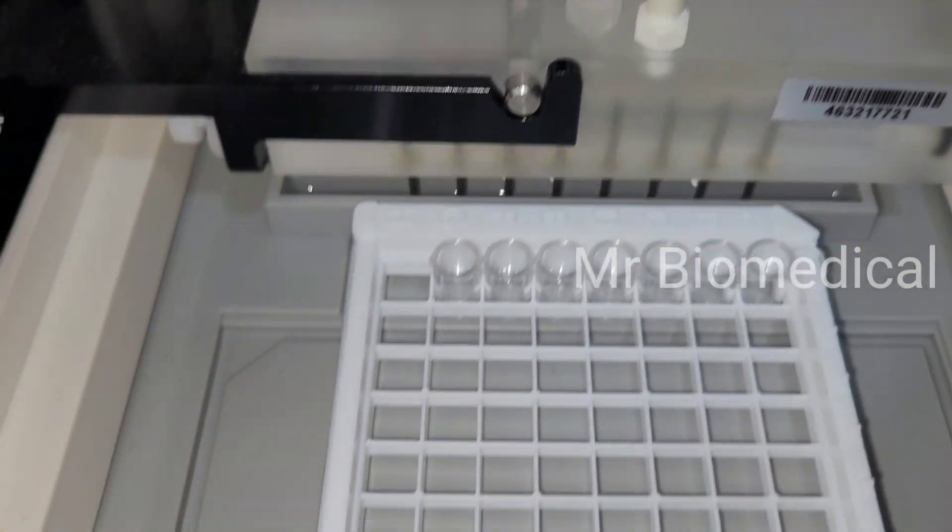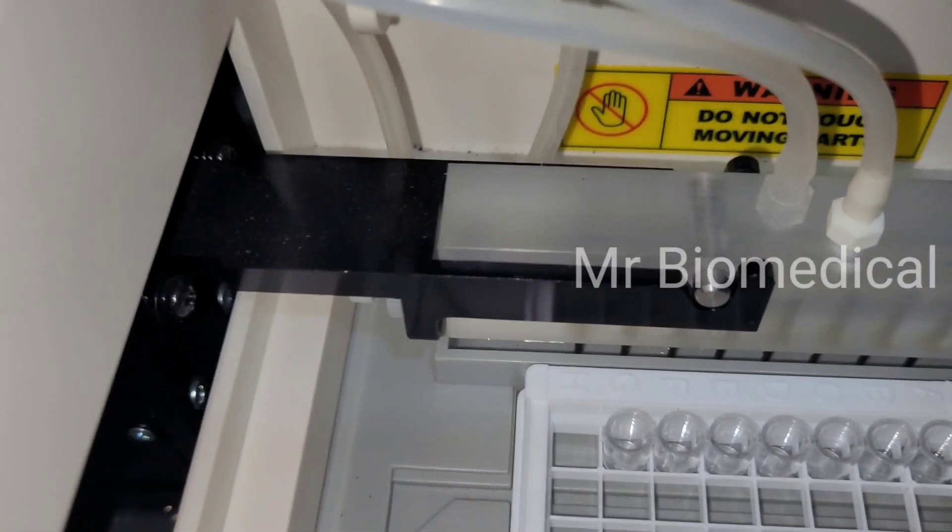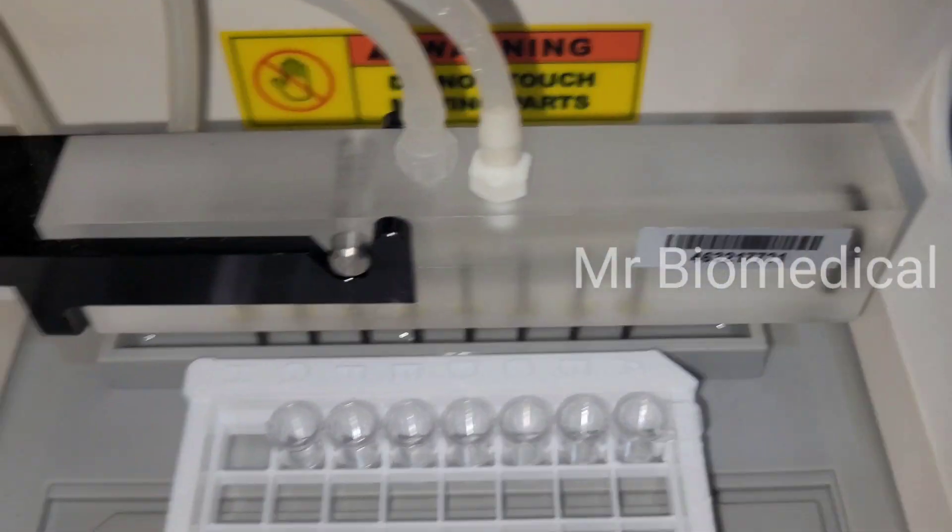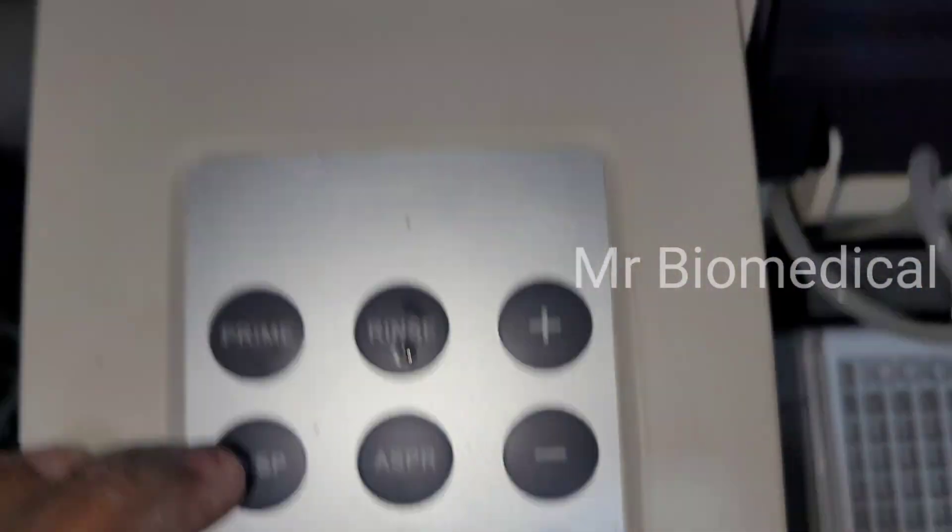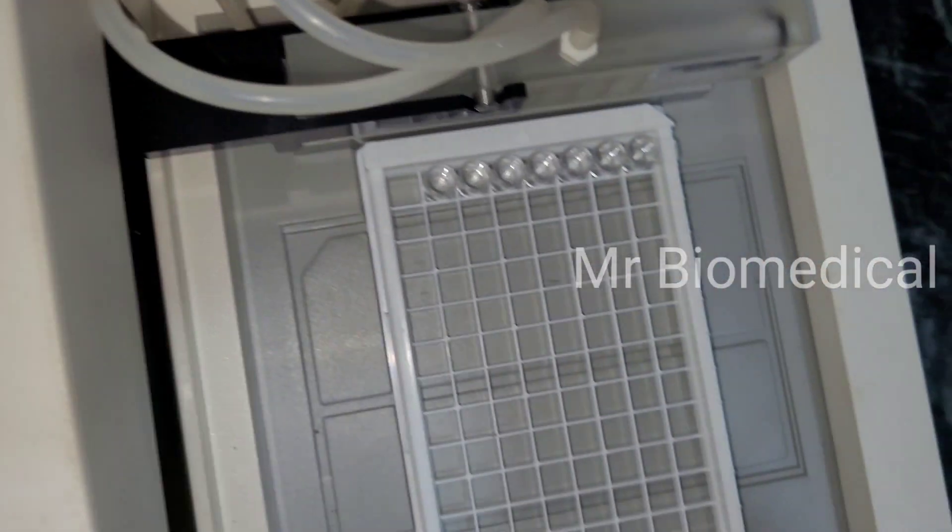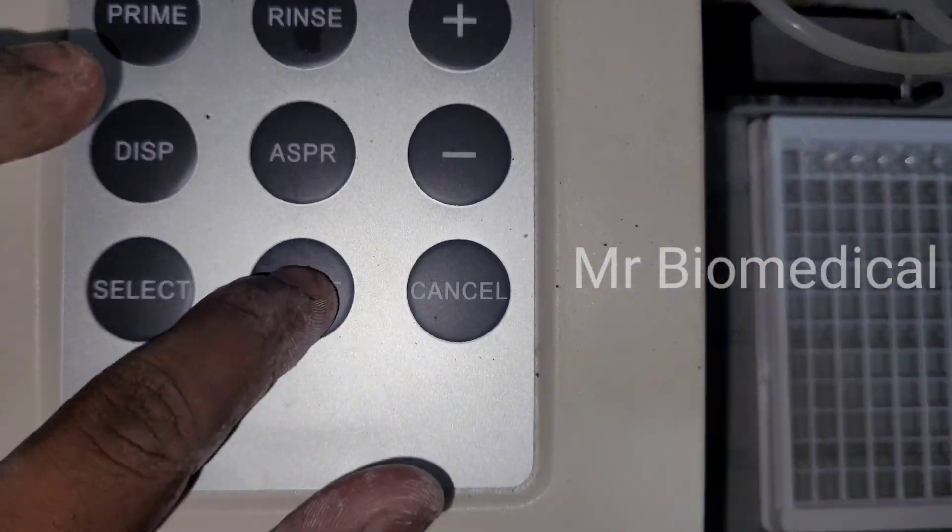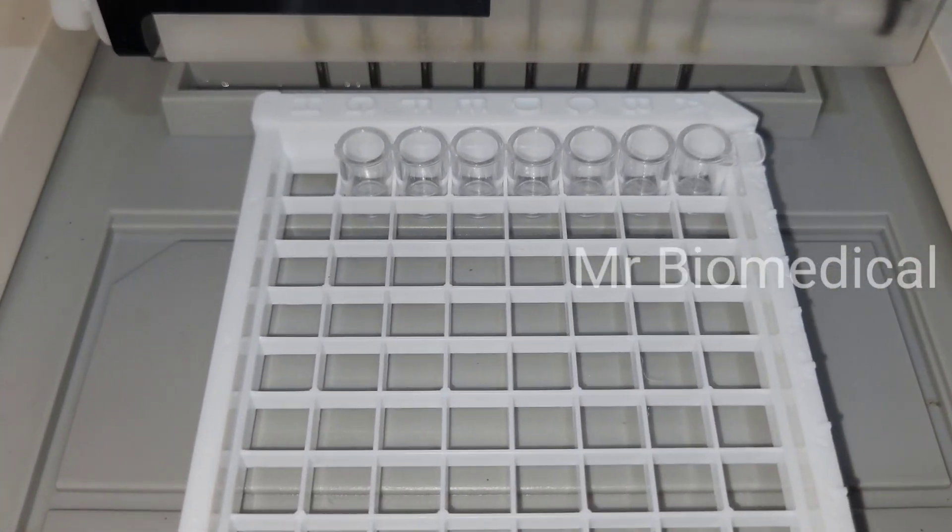Now the main thing is the seven needles have to clean these seven cuvettes. So here we have seven cuvettes, so it will go inside and clean all the cuvettes. If it doesn't, we have to clean it with a needle or something because it will get blocked inside.